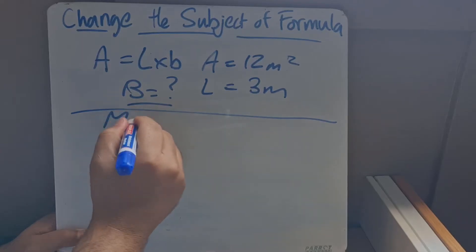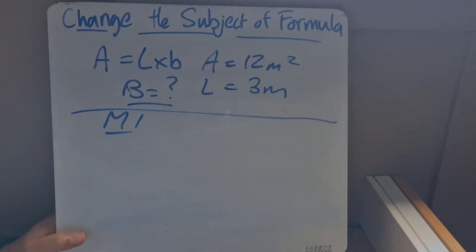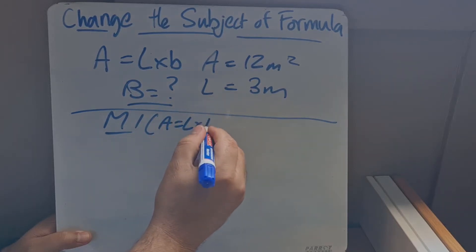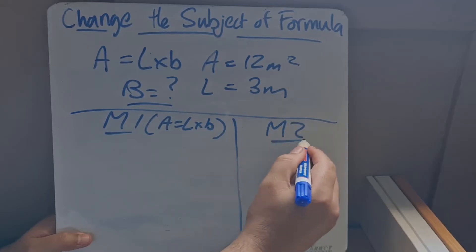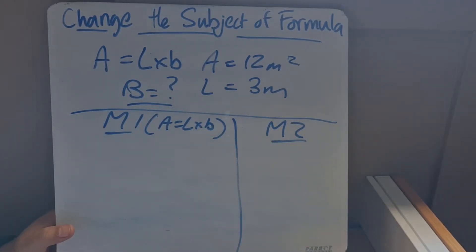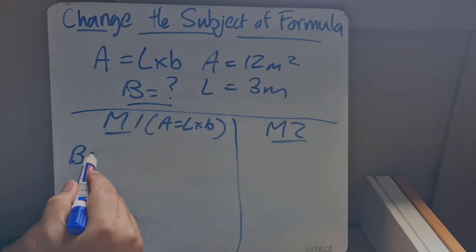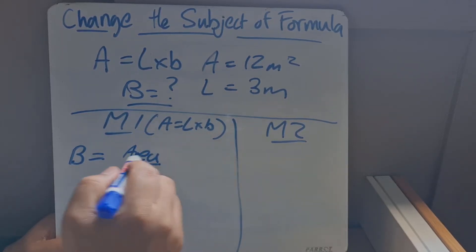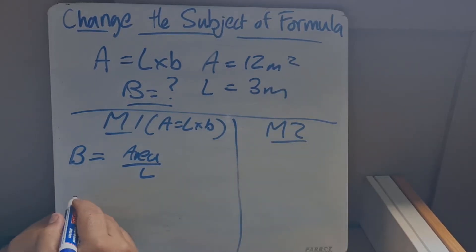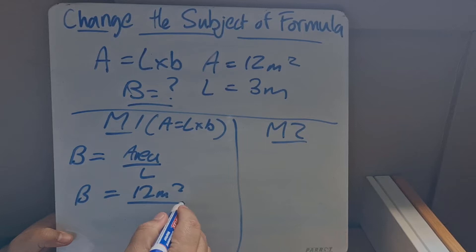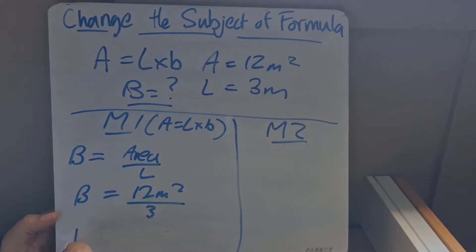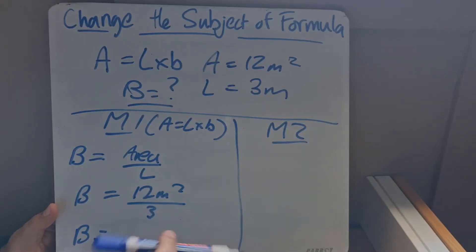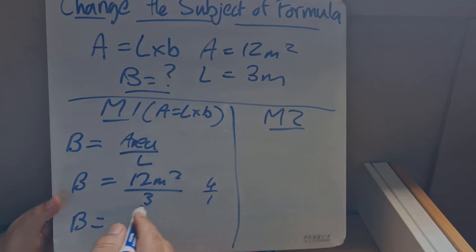Method one: we are still using area equals length multiplied by breadth, but it's breadth that we actually want. So we start with breadth: b equals area over length. The area is 12 square meters divided by the length which is 3, giving us 12 over 3, which equals four meters.